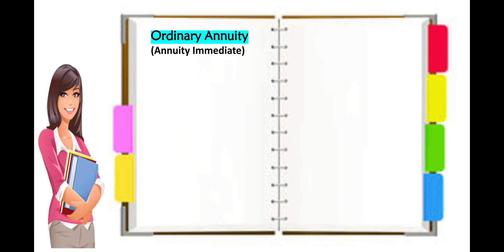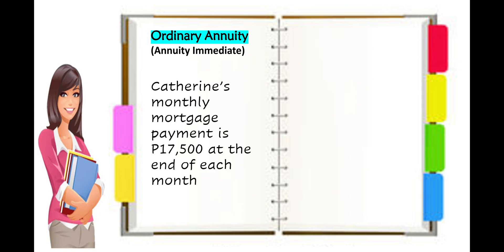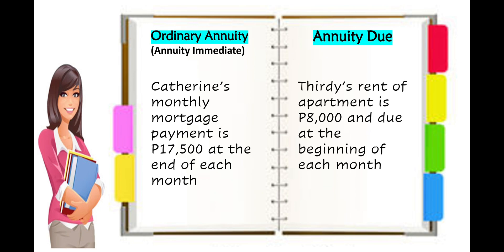For example of ordinary annuity: Catherine's monthly mortgage payment is $17,500 at the end of each month — she pays $17,500 every end of the month. For annuity-due: Thirdly's rent for an apartment is $8,000 due at the beginning of each month. As Thirdly occupies the apartment, he gives the first payment of $8,000 at the beginning of each month.